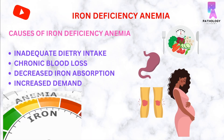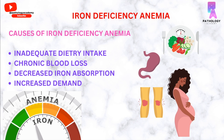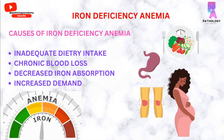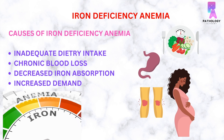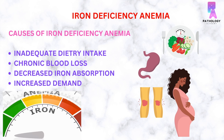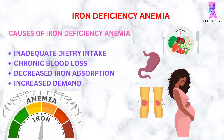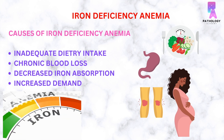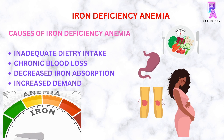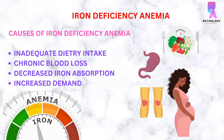Iron Deficiency Anemia can occur due to inadequate dietary intake, for example in patients who are not taking iron-rich food, or people who are vegetarian or take a vegan diet. Also, in people who have trouble absorbing iron, for example in patients with celiac disease or Crohn's disease, the patient can develop iron deficiency anemia.